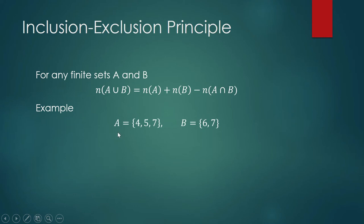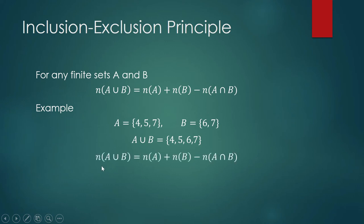From our previous example, when we took the set union A union B, it has four elements. Let us apply the inclusion-exclusion principle to verify that the cardinal number of A union B is four. The cardinal number of A union B equals the number of elements in A, which is three, plus the number of elements in B, which is two, minus the number of elements in A intersection B. There is one element in A intersection B — that is 7, which is common to both A and B.